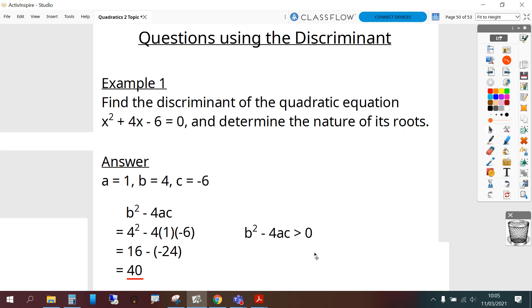So because the discriminant is more than 0, the function has two real and distinct roots. We say distinct because they're at different places. We can tell them apart.